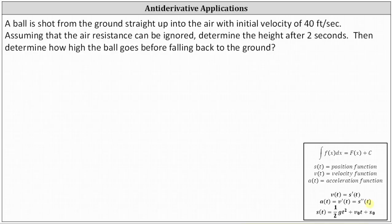Let's begin by listing out all the given information. Because the ball is shot from the ground, the initial height or initial position is zero, which indicates s of zero equals zero feet. The initial velocity is 40 feet per second, which means v of zero is equal to 40 feet per second.